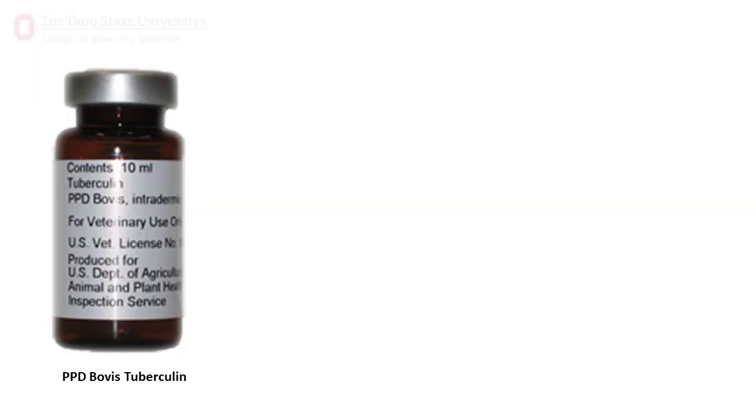We are going to go over the details necessary for performing the caudal tail fold test, the test that you will be doing as a licensed and accredited veterinarian after you graduate. First of all, you will need bovine purified protein derivative — basically tuberculin antigen. It is the protein from Mycobacterium bovis that has been purified so it cannot in and of itself cause disease, but it resembles the bacteria and so the body responds as if it were tuberculosis.